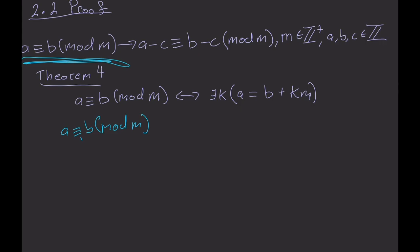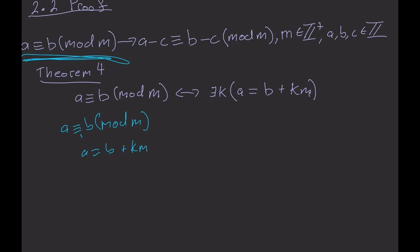Using theorem four, we can go from this to a equals b plus km, assuming there exists some integer k of this equality here. And because this is an equality, we can easily subtract c from both sides.